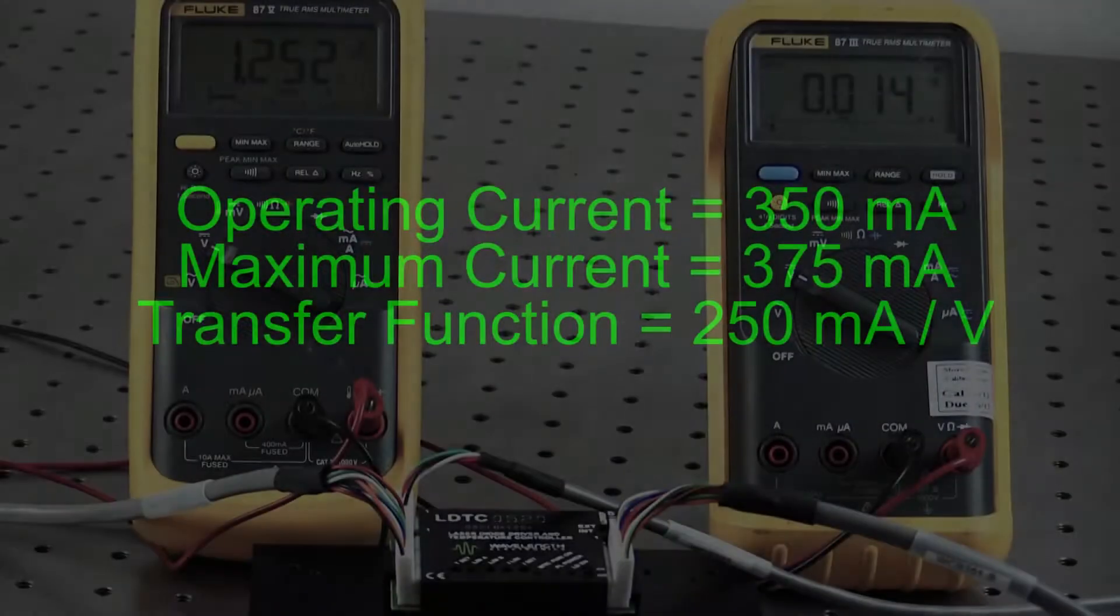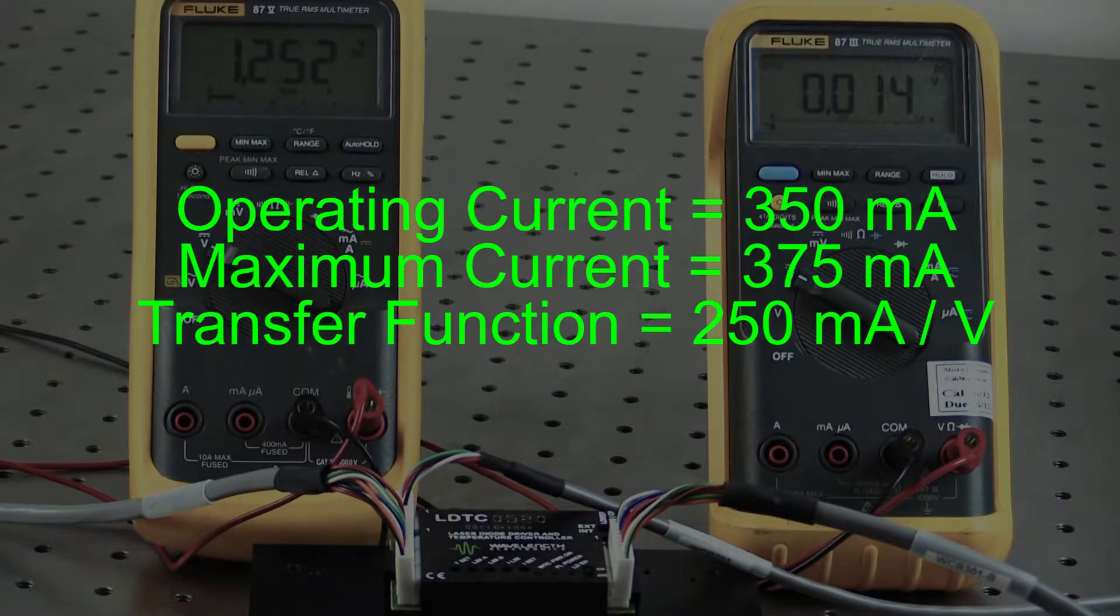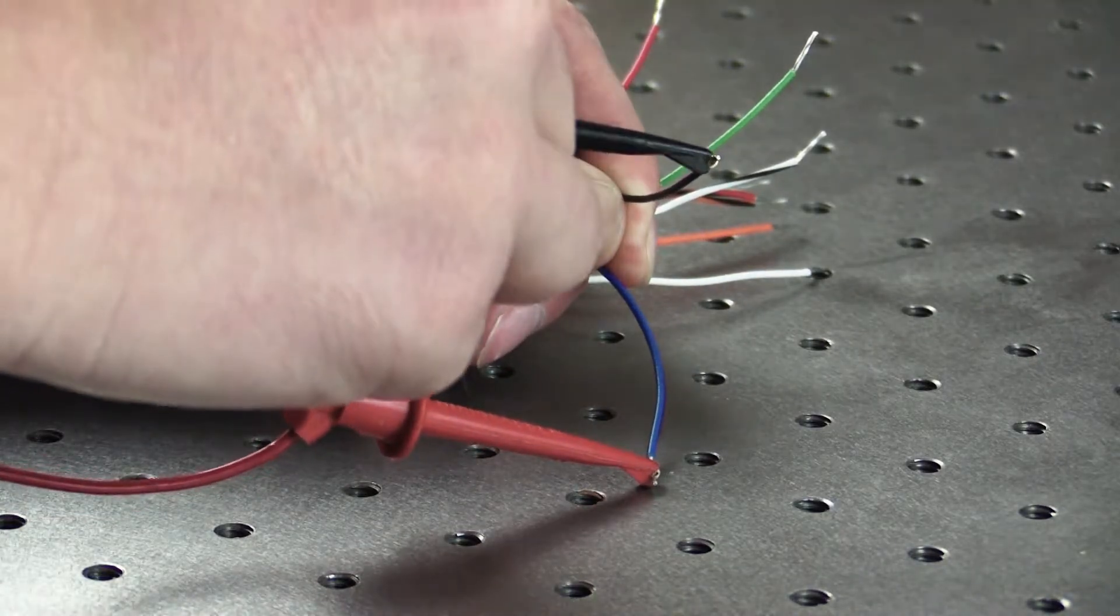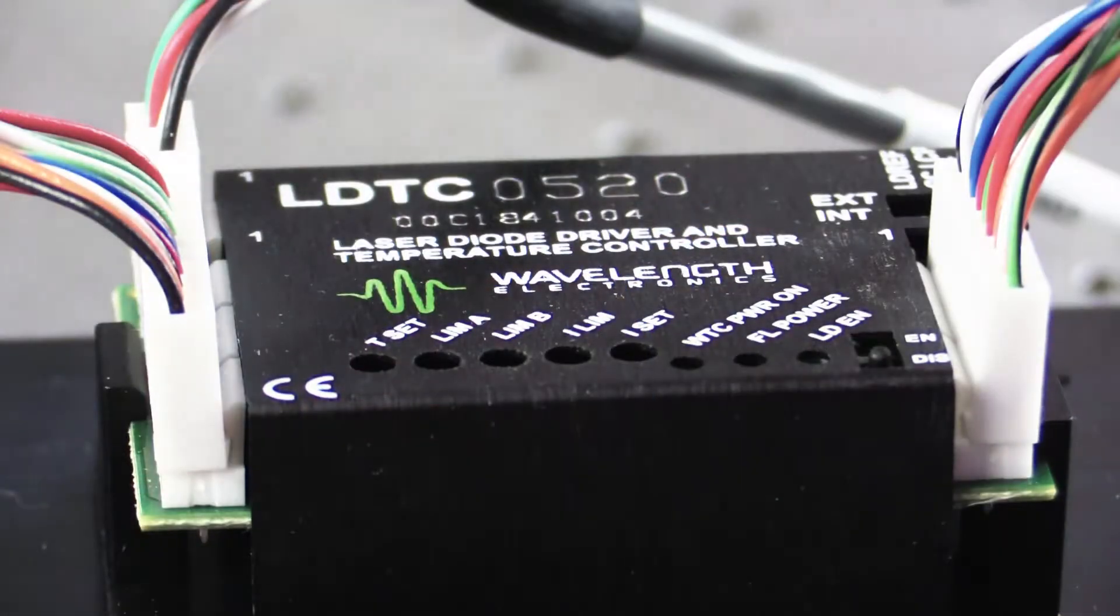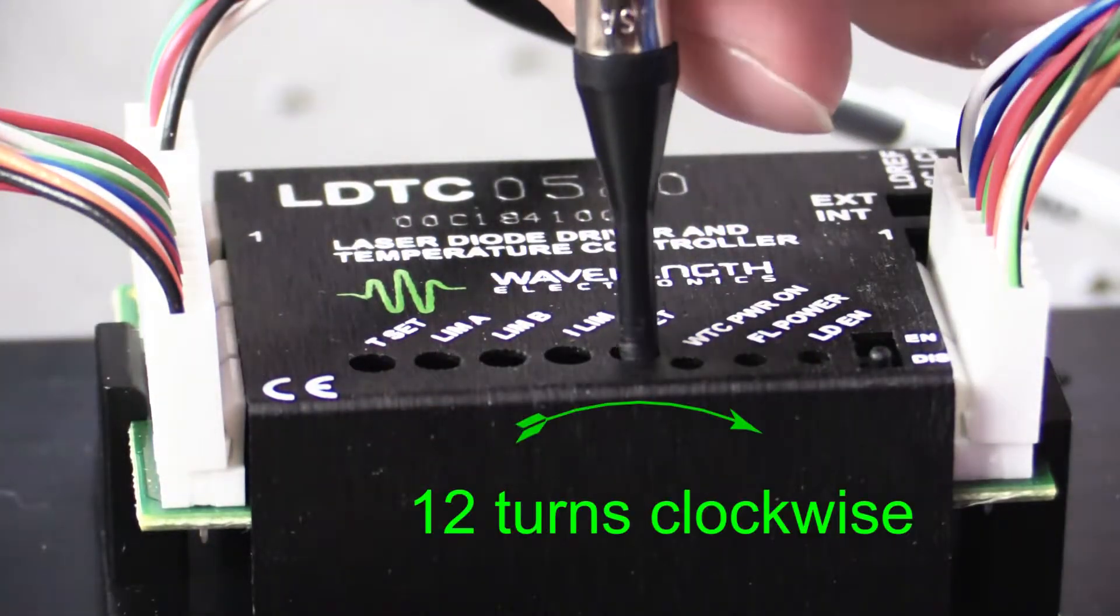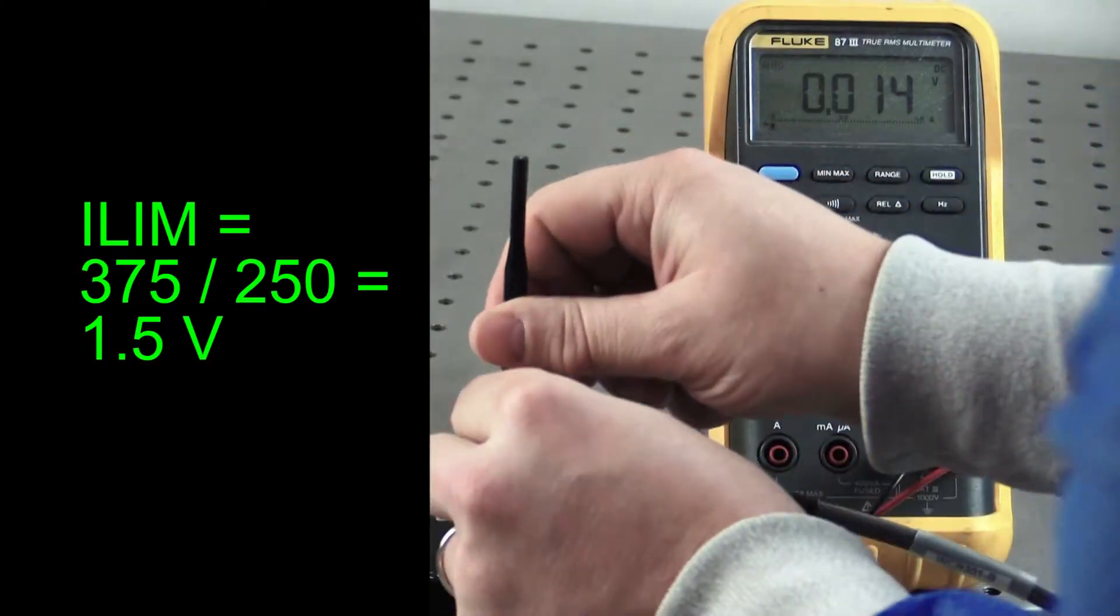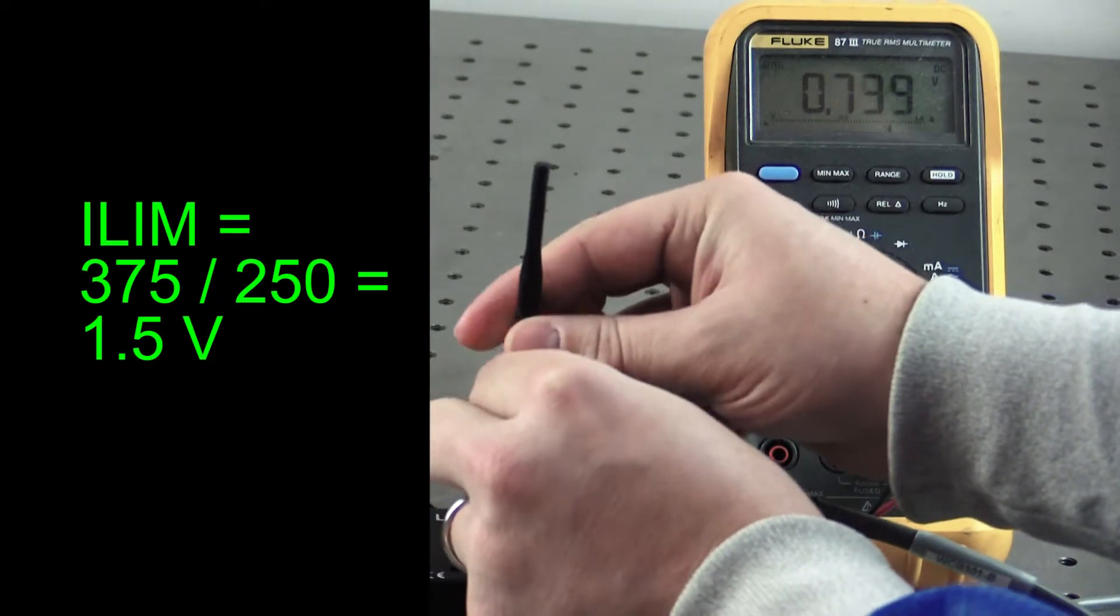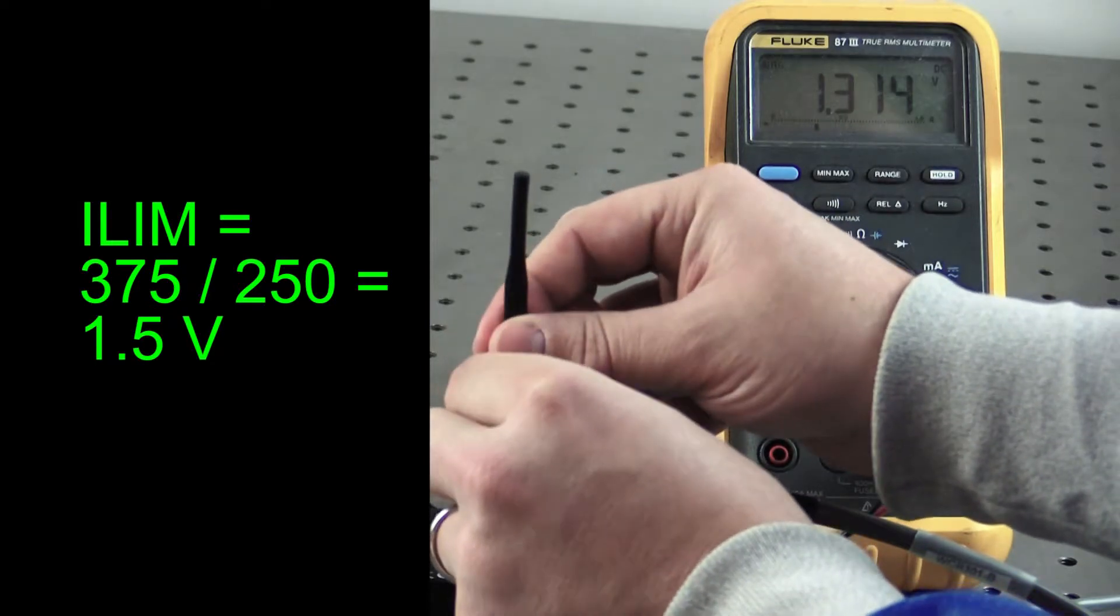We want to operate at 350 milliamps with a maximum current of 375 milliamps. The LD Imon transfer function for the LDTC0520 is 250 milliamps per volt. We will set the limit current first. Connect the multimeter to LD Imon and common. Turn the ISET trim pot fully open 12 turns clockwise. Now, adjust the ILIM trim pot clockwise until the voltmeter reads 1.5 volts. The limit is now set at the maximum allowed current of 375 milliamps.